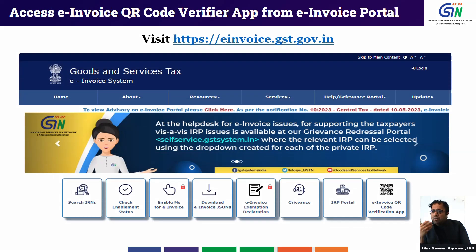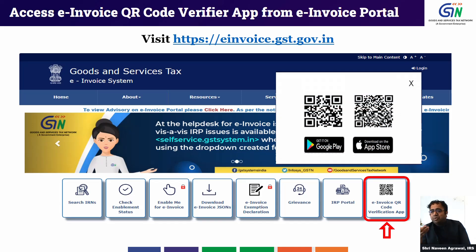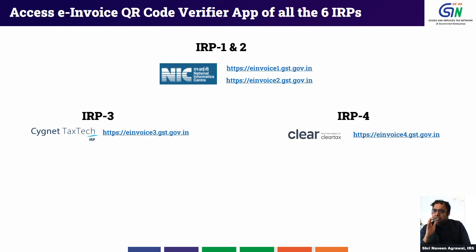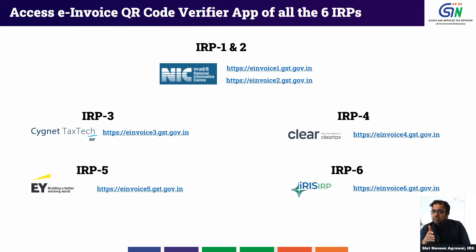To download the app, you can also visit e-invoice.gst.gov.in and click the 'e-invoice QR Code Verification App' tab, where you will find QR codes for both the Play Store and App Store. Additionally, all six IRP partners have provided a similar app and functionality on their own portals, so you can go to any of the six IRP portals and download a similar application to verify e-invoices.